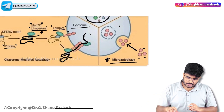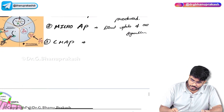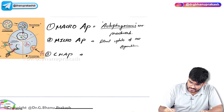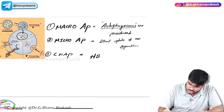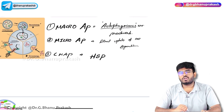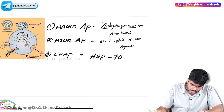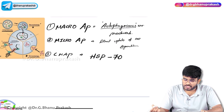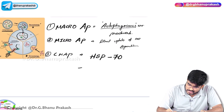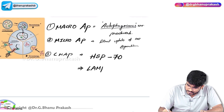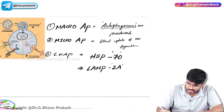In chaperone-mediated autophagy, the chaperones involved are HSP70 or HSC70 — heat shock protein 70. The molecules present on the lysosome are LAMP2A molecules.